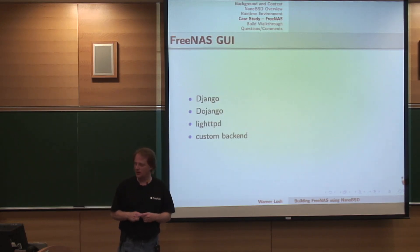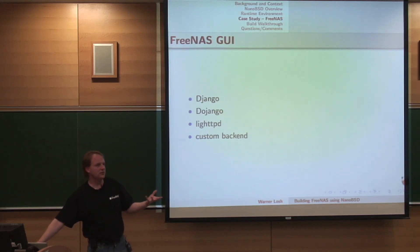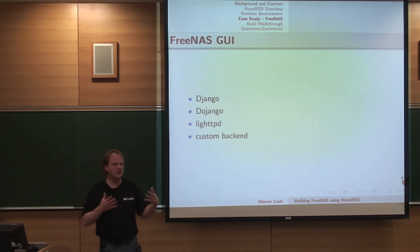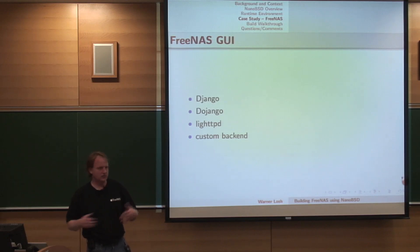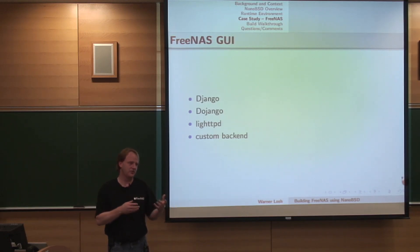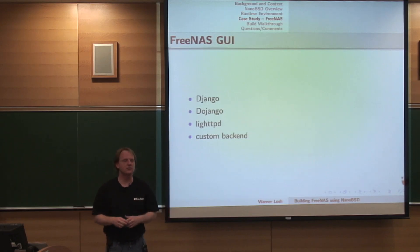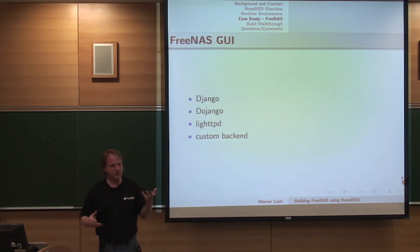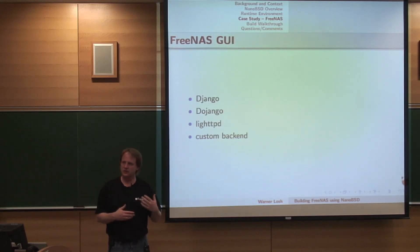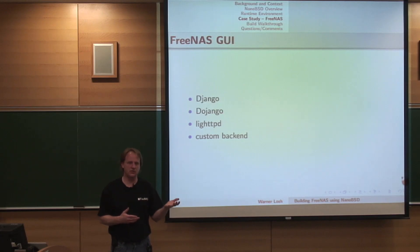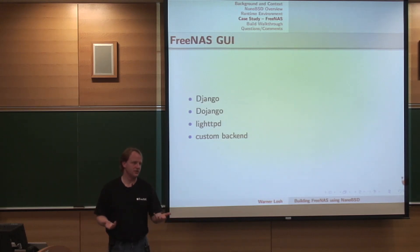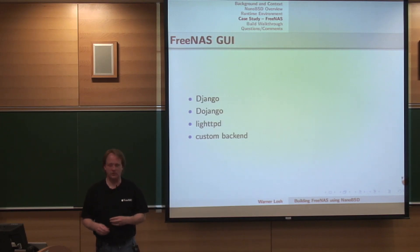FreeNAS's GUI is based on Django and uses Dojango to get Ajax — a fairly standard appliance GUI setup. It's got a custom backend so that when you make changes you don't have to reboot like on Windows. You add a file system — boom, it shows up. You add a network interface, it shows up, and all the file systems are exported on it. The code uses the same backend logic and scripts to add and remove things at runtime that it does at boot, so you have a high degree of assurance that if you tested it live on the system, you don't have to separately test it on boot.